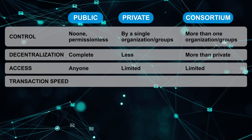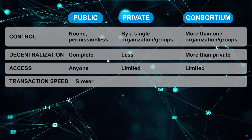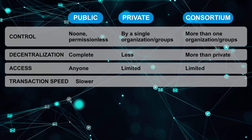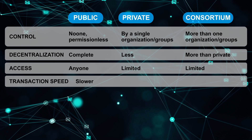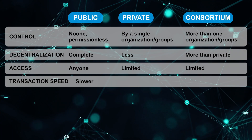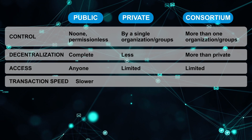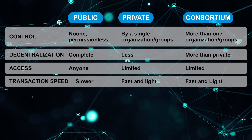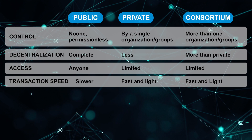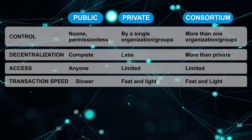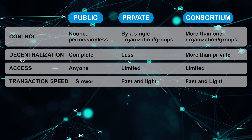The next point we have is transaction speed. Since the nodes in public blockchain are unknown, we need some kind of consensus mechanism like proof of work or proof of stake, so it takes a little more time to mine or validate transactions in the block. Whereas in private and consortium blockchain, since the nodes are known, there is no need for this consensus mechanism, and hence the transaction speed is lighter and faster.